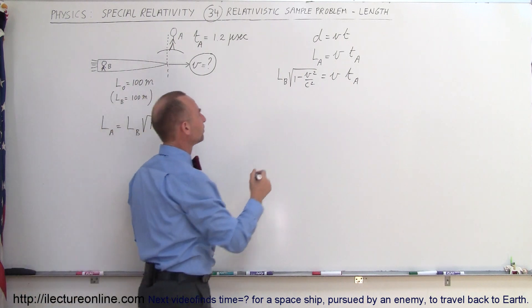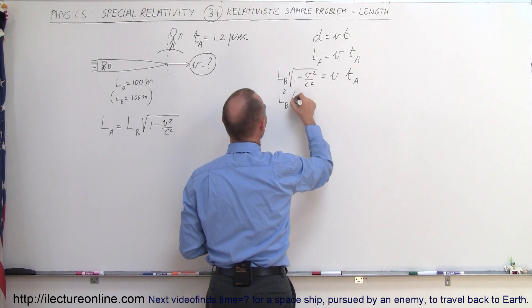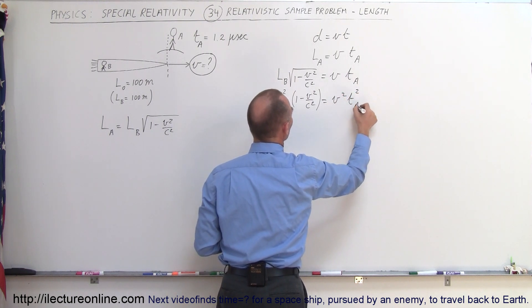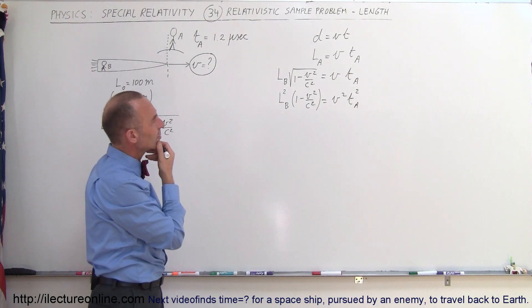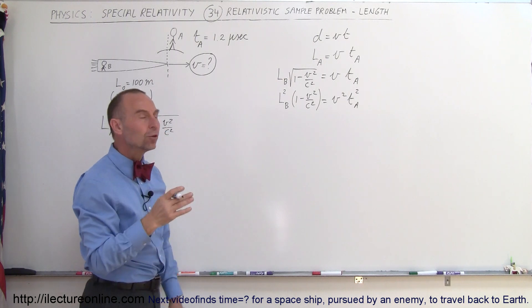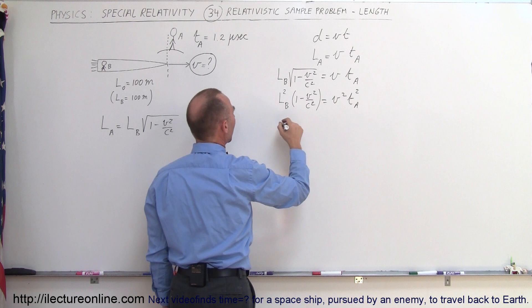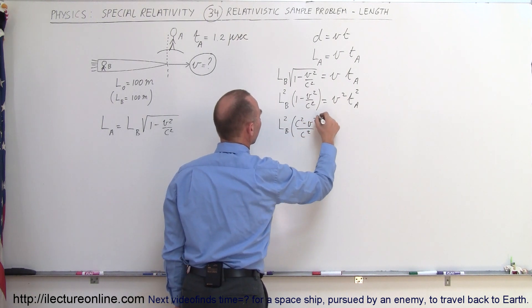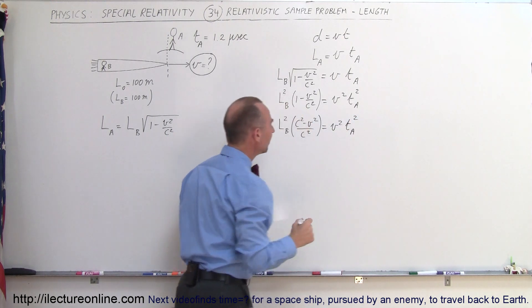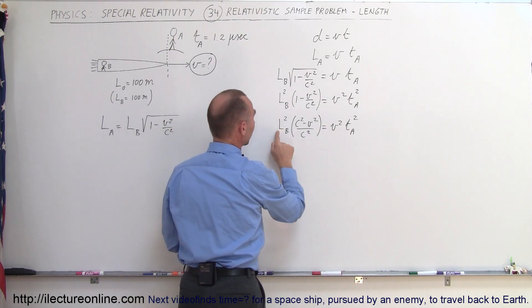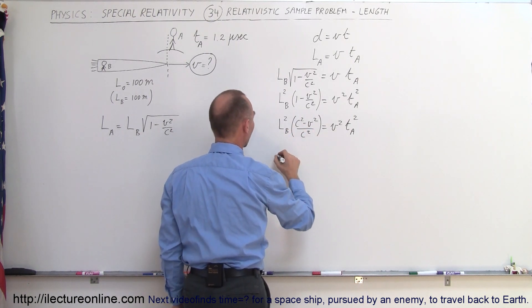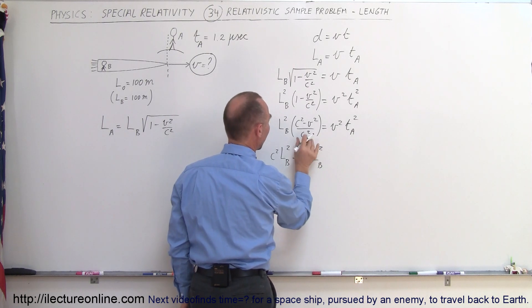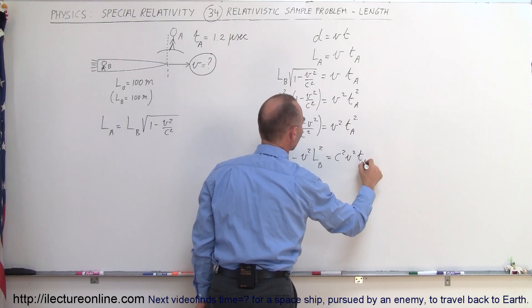We square both sides, giving us L sub B squared times the quantity (1 minus V squared over C squared) equals V squared times T sub A squared. Writing over a common denominator, this becomes L sub B squared times (C squared minus V squared) over C squared equals V squared times T sub A squared. Moving the denominator across, we get C squared times L sub B squared minus V squared times L sub B squared equals C squared times V squared times T sub A squared.